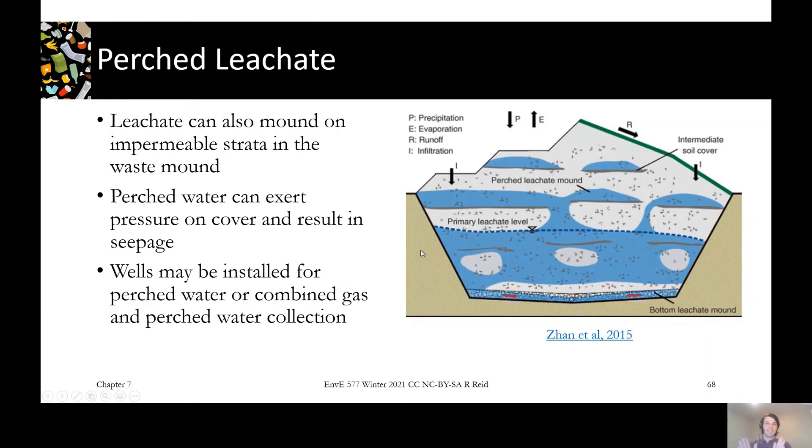The other last thing I'll say about leachate is that it's all well and good to have this nice liner on the bottom and a leachate collection system that's going to carry it away, but not all leachate is going to be sitting nicely in mounds on the bottom. There's all sorts of reasons where it can get stuck on its way down. It could be a layer of daily cover that has a really low conductivity. When water gets stuck against the side of the final cover, it can push hydrostatically and actually bust out in a leachate seep.